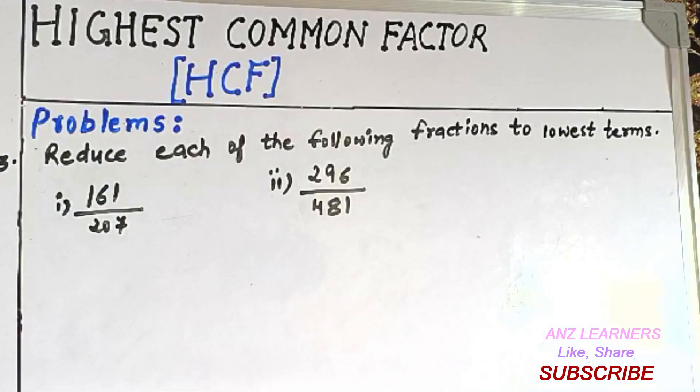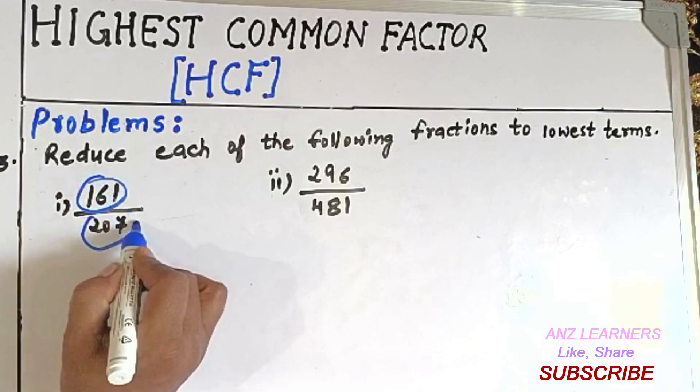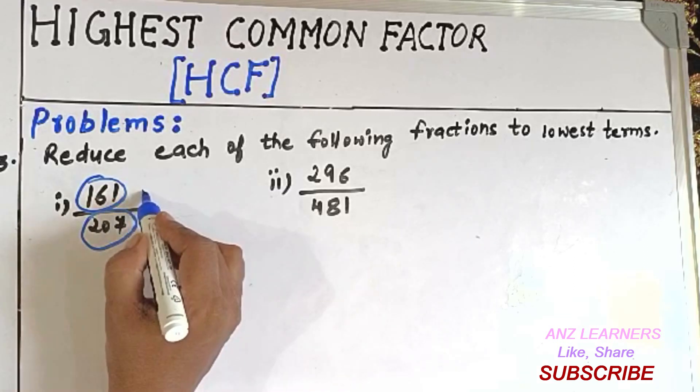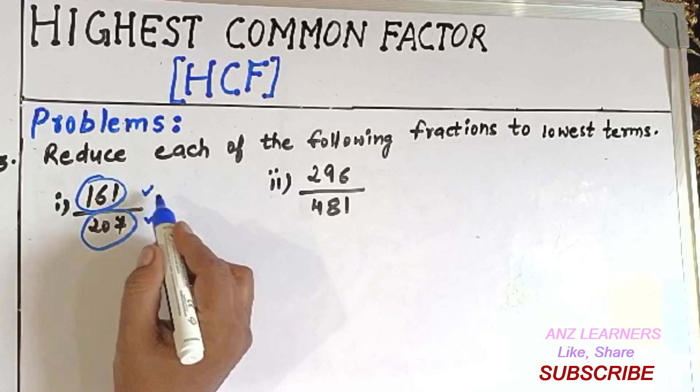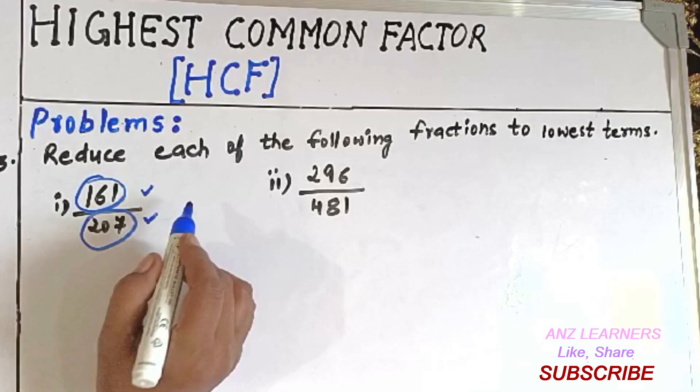So what we can do here - the numbers given are 161 and 207. We have to find the highest common factor of these two numbers and divide by it so that we can express them in the lowest possible form.